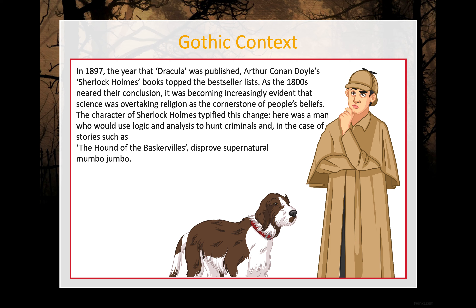In 1897, the year that Dracula was published, Arthur Conan Doyle's Sherlock Holmes books topped the bestseller lists. As the 1800s neared their conclusion, it was becoming increasingly evident that science was overtaking religion as the cornerstone of people's beliefs. The character of Sherlock Holmes typified this change — here was a man who would use his logic and analysis to hunt criminals and, in the case of stories such as The Hound of the Baskervilles, disprove supernatural mumbo-jumbo.